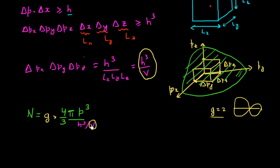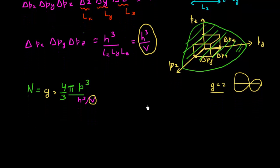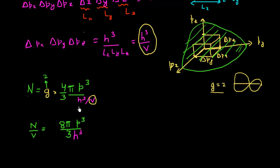Taking the volume V to the left-hand side and substituting the degeneracy factor of two, I get 8π p³ / (3h³). This is distributed across all solid angles, so to find the number of photons per unit solid angle I divide by the total solid angle 4π, which gives the number of photons per unit solid angle as 2p³ / (3h³).